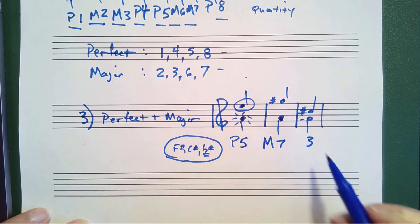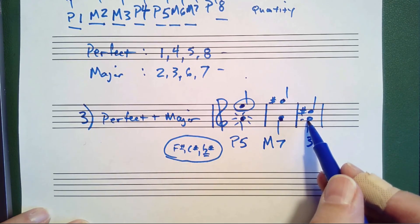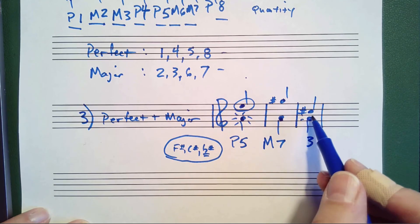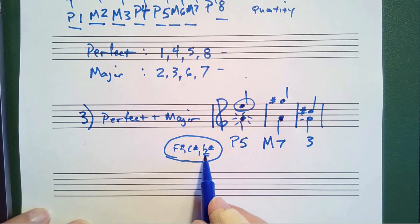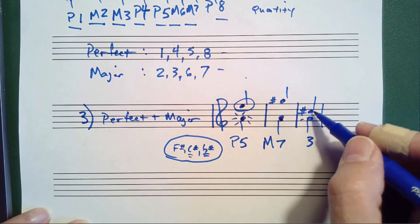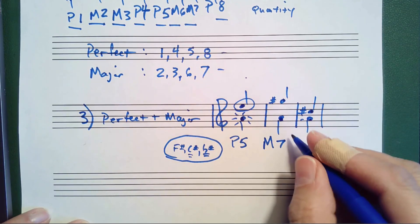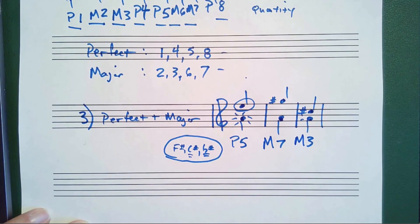And then you think of the key signature of the bottom note. The key signature is F sharp, C sharp, G sharp. You see a C sharp there. Therefore, this note is the third note of this scale, and this is a major third.